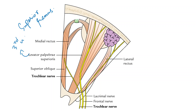Moving on to the action of the levator palpebrae superioris: as stated, it elevates the upper eyelid. The muscle mainly brings about the elevation of the upper eyelid.